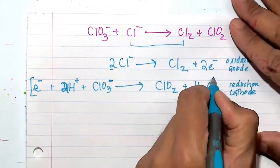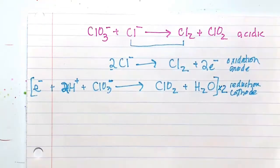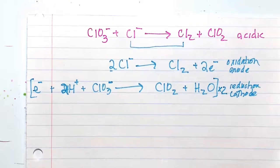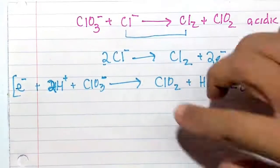Let's multiply this bottom reduction half reaction by two. Multiplying this out by two. Okay, let's rewrite this.